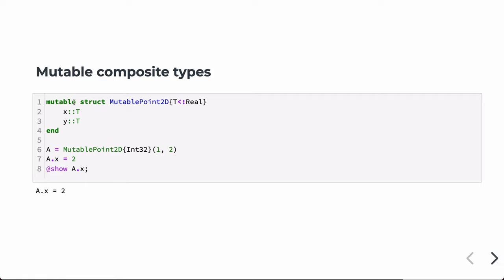We can also create mutable composite types. To do that, we use the keyword mutable in front of struct. This is otherwise just like the previous type, restricting fields to real numbers with two fields. Now we can instantiate a MutablePoint2D, assign it to variable a, and then reassign one of the fields — for example, set a.x = 2. Printing it out confirms it's now two, where it was originally one upon instantiation.